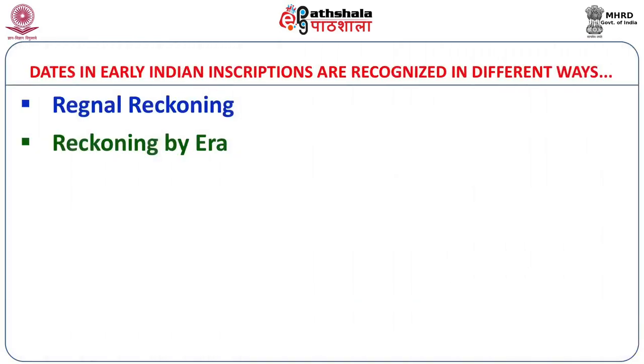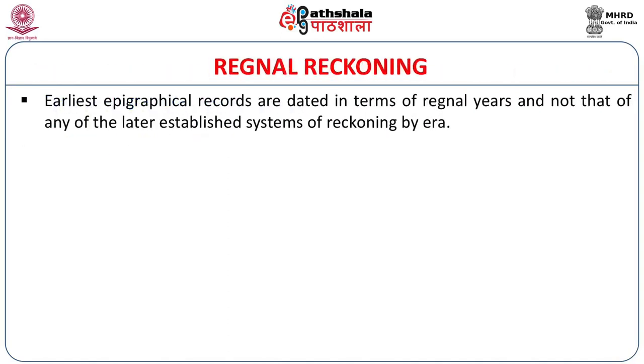Inscriptions provide dates in two major ways. One is they are dated in terms of the regnal year of the king, which is called regnal reckoning, and then the dates are specified within a certain era which is usually termed reckoning by era. The earliest epigraphic records, if we look at the regnal type of recording, are dated in terms of regnal years and not that of any of the later established systems of reckoning by era.